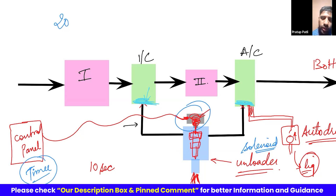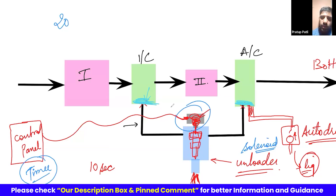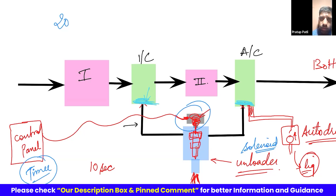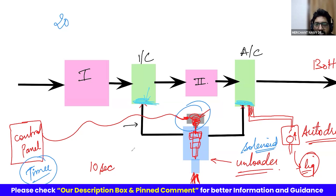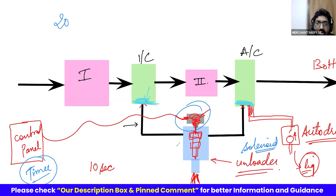A student asks if the unloader helps remove moisture from the system. The instructor clarifies: the third function of the unloader is to remove condensate — not moisture. Moisture is in the air in vapor form; only when it becomes liquid is it called condensate. The job of the unloader is not to make the air drier but to drain out whatever has already condensed. That is one of the jobs, but the main job is to unload the motor and the bearings.